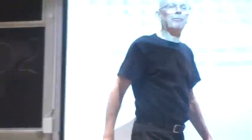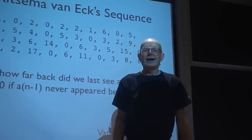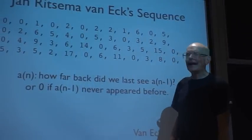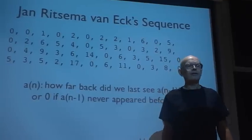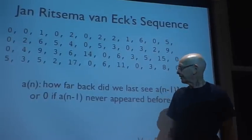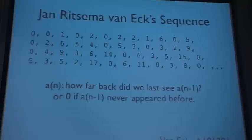And the question is, what happens? And the answer is, we don't know. Danek was able to prove that there are infinitely many 0s. We know the sequence is unbounded, but that's about all we know.